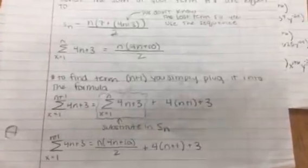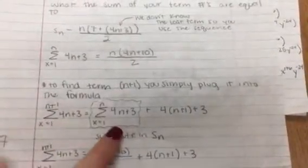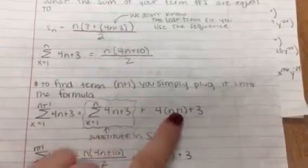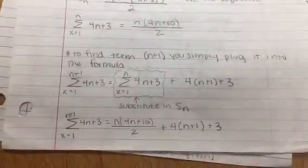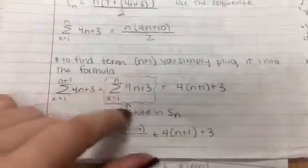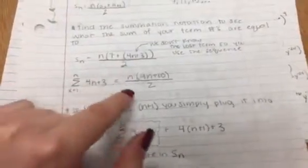So then to find the term n plus 1, you simply plug it into the formula. So here's the regular thing. And then you're going to plug n plus 1 in for n. So 4 times n plus 1 plus 3. And then this can be substituted in for s of n because that, I proved it right here, is equal to that. So here's that right there.